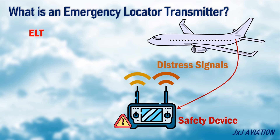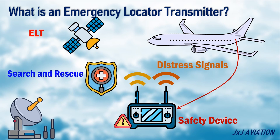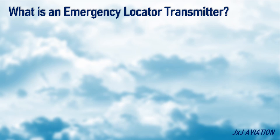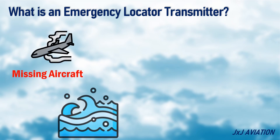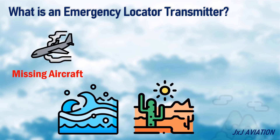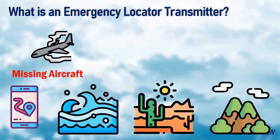These signals are picked up by satellites and ground-based receivers, which will be used for search and rescue operations. If an aircraft goes missing over remote areas, such as oceans, deserts, or mountainous regions, the ELT signals are used to locate the missing aircraft quickly.